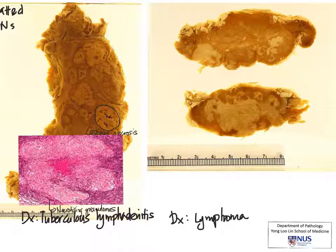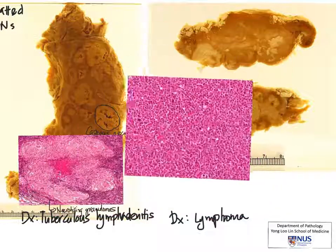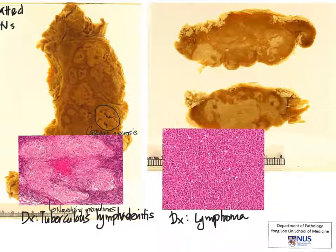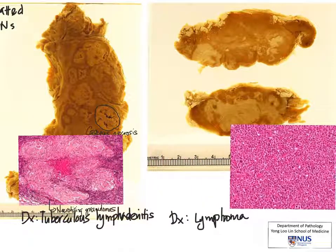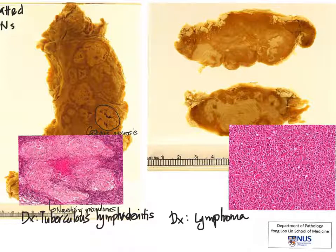Under the microscope, we will actually see a loss of lymph node architecture with sheets of abnormal lymphocytes. This happens to be a case of non-Hodgkin lymphoma. We have looked at some of the similarities in gross appearance and clinical presentation between tubercular lymphadenitis and lymphoma, and we learned that in order to make a definite diagnosis, a tissue biopsy as well as microbiologic tests are very important.